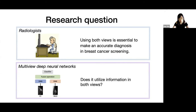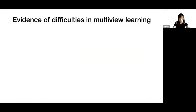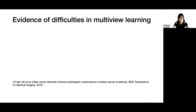There are also attempts in building multi-view deep neural networks to process both views simultaneously. However, does it actually utilize information in both views? In fact, there is evidence showing that it is hard for this type of network to achieve satisfactory performance in some tasks. One example can be drawn from our previous work on breast cancer screening.